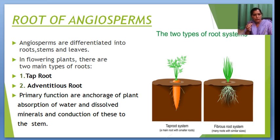Next is the root of Angiosperms. Angiosperms are differentiated using root, stem, and leaves. In flowering plants, there are two main types of roots: first is the tap root, and second is the adventitious root. The main function of the root is anchorage of the plant and absorption and conduction of water and minerals up to the stem.